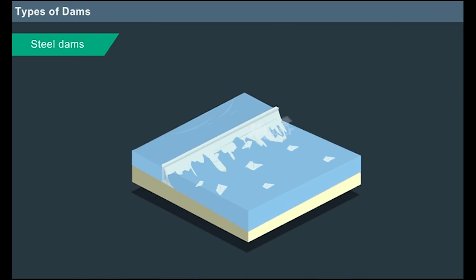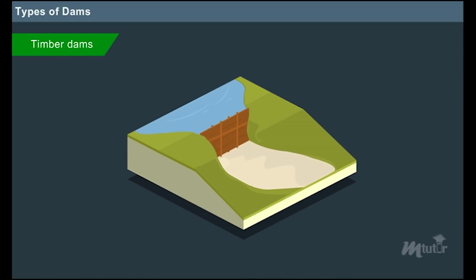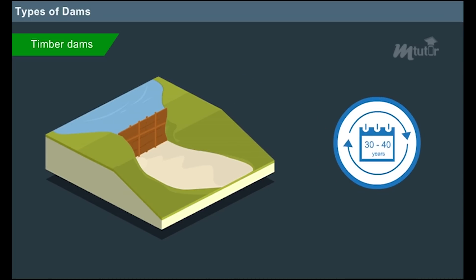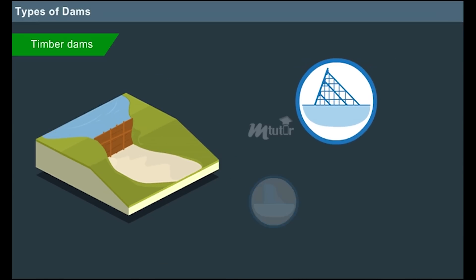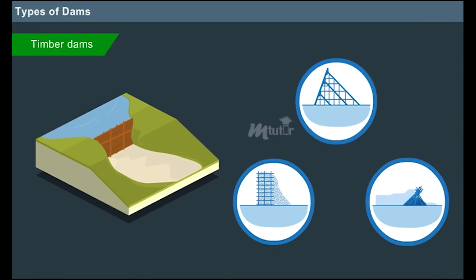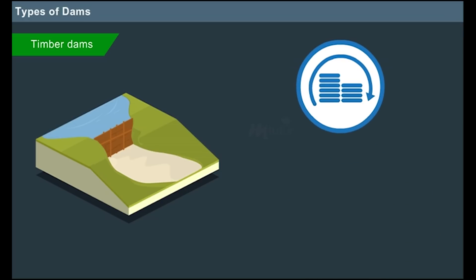Timber dams: These dams are constructed using timbers. Usually, the timber struts and timber beams face towards the upstream side to resist the water pressure. The life of timber dams ranges from 30 to 40 years. Timber dams are further classified as A-frame type, rock-filled crypt type and beaver type. The initial cost of construction is less and it is suitable for any type of foundation. Its disadvantages include short life and high maintenance cost.